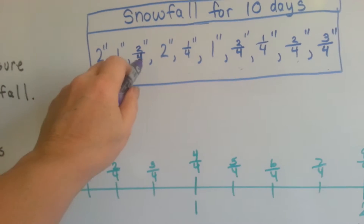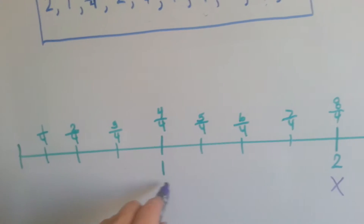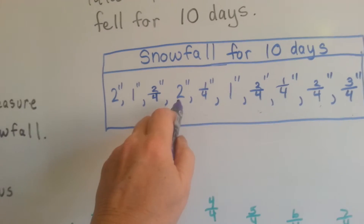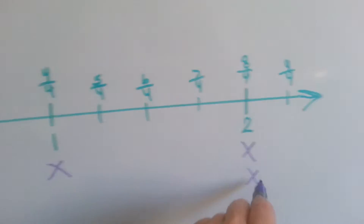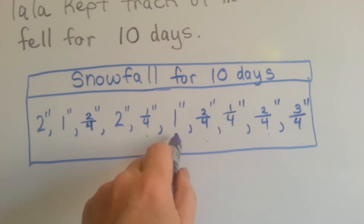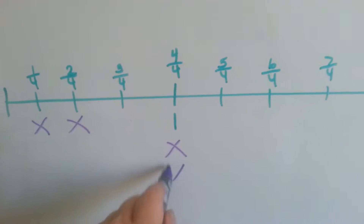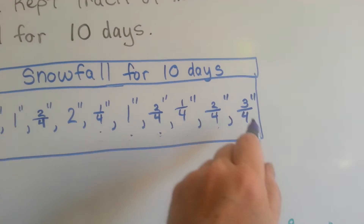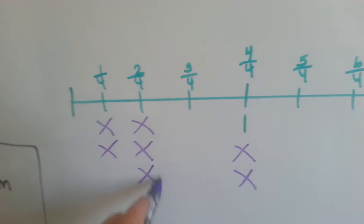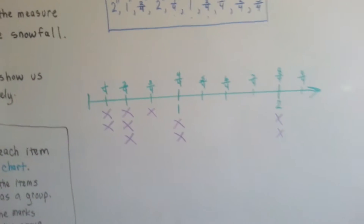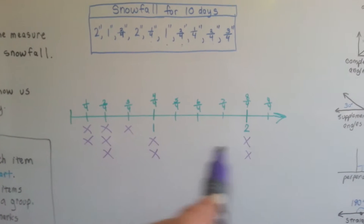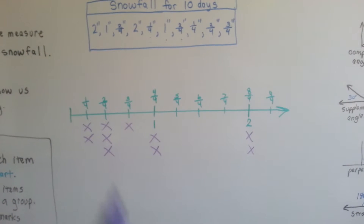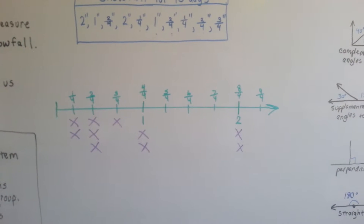We have 1 inch and 2 fourths. We have another 2 inches and 1 fourth. Another 2 inches and 1 fourth. Then we have 1 inch and 2 fourths. Then we have 1 fourth, 2 fourths, and 3 fourths. Now we can stand back and look at the line plot and say, 2 fourths inches was the most.